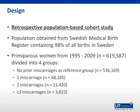This was a retrospective population-based cohort study. The population was obtained from the Swedish Medical Birth Register, containing 98% of all births in Sweden. This comprised primiparous women from 1995 to 2009 with over 600,000 records, divided into four groups: no prior miscarriages as the reference group, one miscarriage, two miscarriages, and three or more miscarriages.